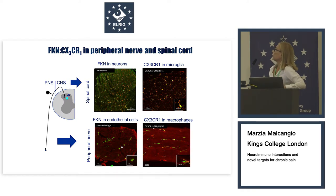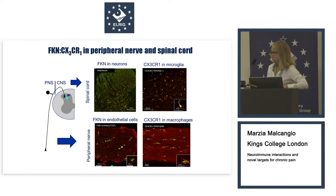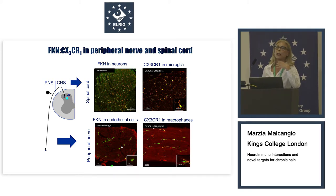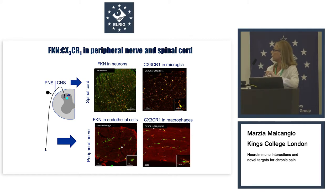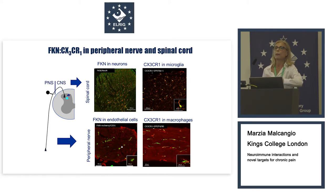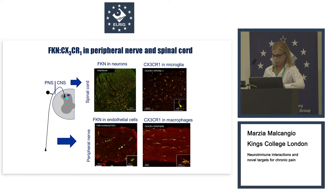The fractalkine and CX3CR1 in our pain system are located as follows. In the periphery, fractalkine is expressed by endothelial cells, and the receptor CX3CR1 is expressed in tissue macrophages and also in circulating monocytes. In the CNS there is no endothelial fractalkine — fractalkine is neuronally derived. Every yellow cell here is a neuron in the dorsal horn expressing fractalkine. The receptor CX3CR1 is exclusively expressed by microglia. So in the spinal cord, fractalkine and CX3CR1 are ideally located anatomically to mediate neuroimmune communication.